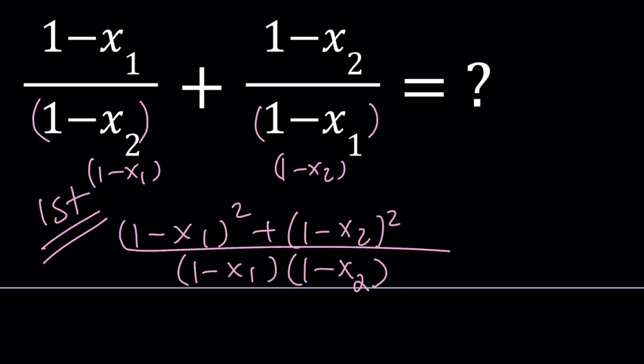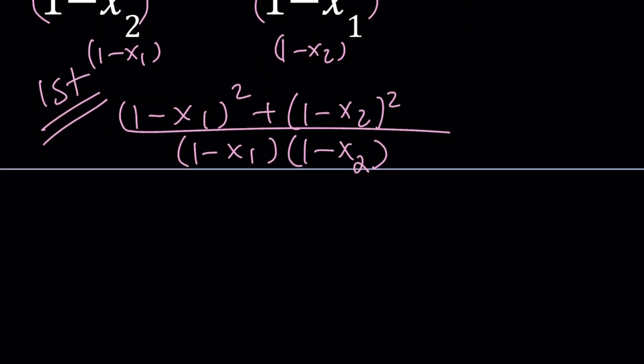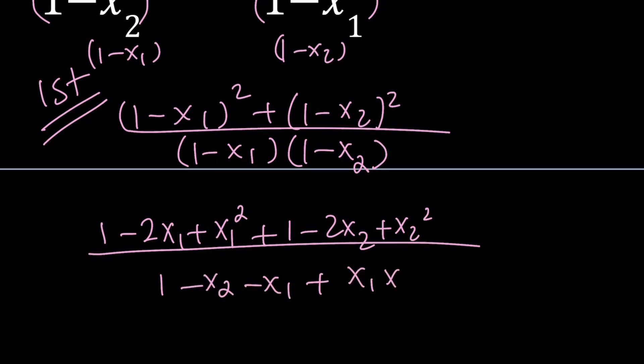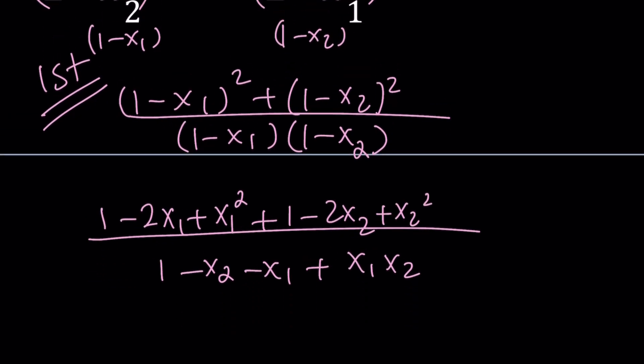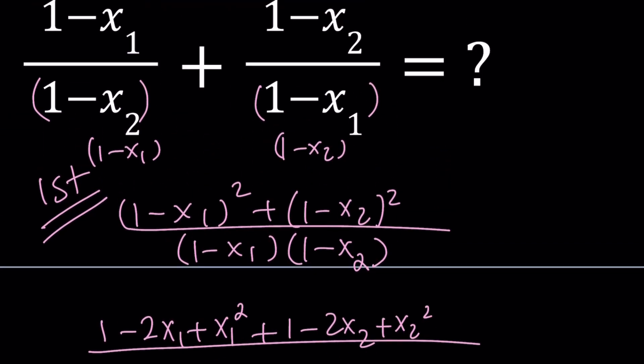Now, let's go ahead and expand the squares and everything. This is going to give us 1 minus 2x1 plus x1 squared plus 1 minus 2x2 plus x2 squared all over 1 minus x2 minus x1 plus x1x2. Now, one of the things that we're going to use here, which is very helpful, is called Vieta's formula. So let's briefly talk about Vieta's formulas, and then I'll come back here and solve the problem.